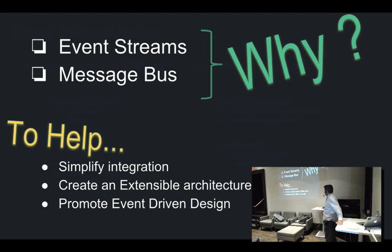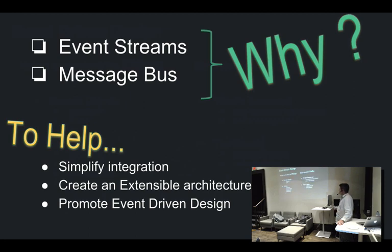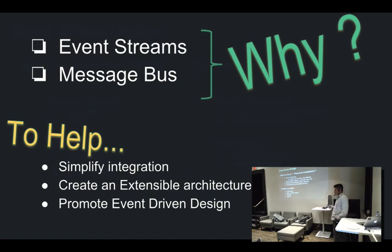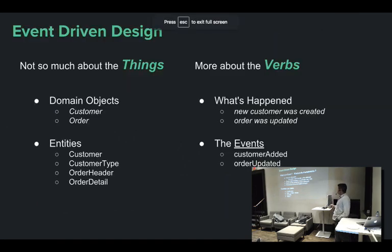Event-driven design: you're not thinking so much about things but more about verbs. Classic domain objects are things like customer, order, order header, order detail. Instead of thinking about those, you start thinking about actions — what has happened? A new customer was created would be an event: 'customer added' or 'order updated.' An event is basically a fact of information that happens over time, and knowledge is the accumulation of facts. Once a particular fact has happened, it's immutable — it can never be changed. But the knowledge it represents can be changed by a superseding event.